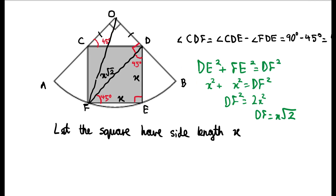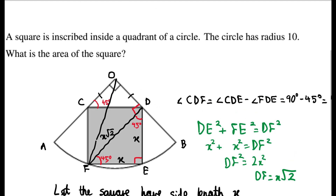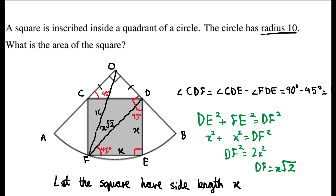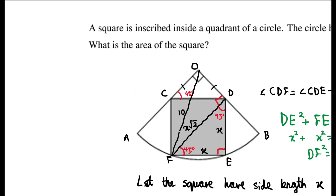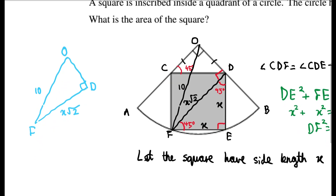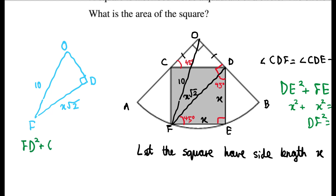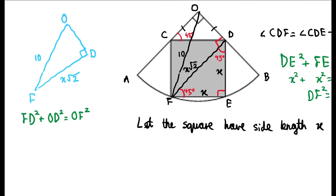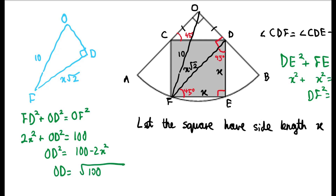If we draw in the line OF, it looks like a radius of the circle, and we were told the circle has radius 10, so we can label it as having length 10. This gives us a right-angled triangle, triangle ODF. Using Pythagoras' theorem, FD squared plus OD squared equals OF squared. FD is x root 2, so FD squared is 2x squared, and OF is 10 so OF squared is 100. Therefore OD squared equals 100 minus 2x squared, so OD equals the square root of 100 minus 2x squared.